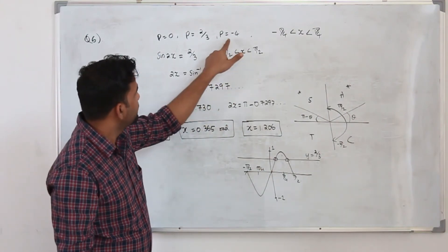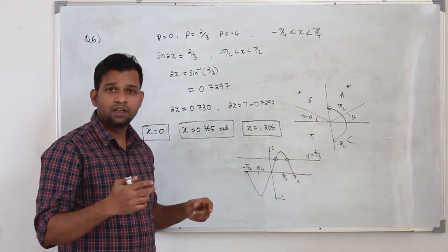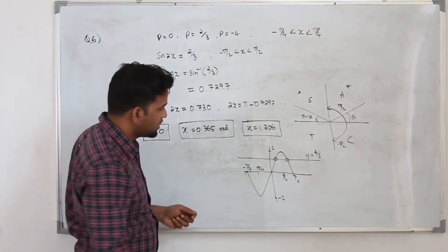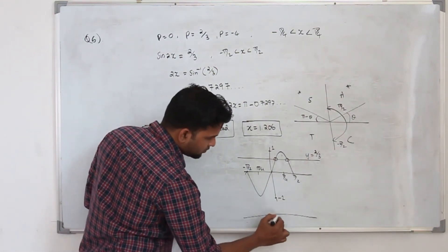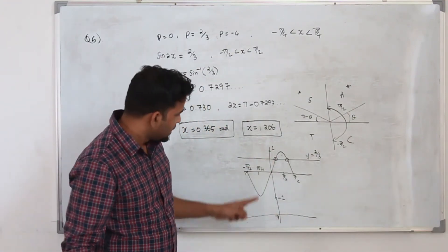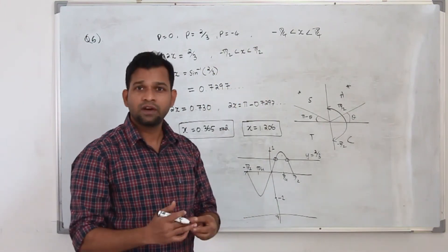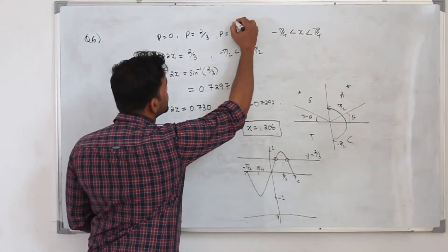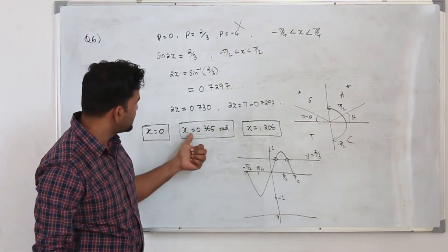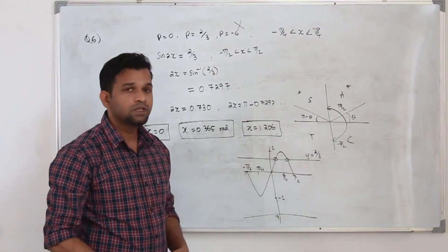For case 3, sin 2x = −4. Since −4 is outside the range [−1, 1], sin⁻¹(−4) has no solution. There is no point of intersection on the graph, so this case yields no solution. Therefore the three solutions are: x = 0, x = 0.365 radians, and x = 1.206 radians.